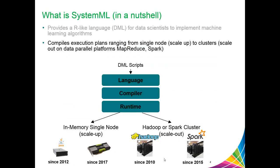SystemML has a cost-based compiler that automatically generates hybrid runtime execution plans composed of single node and distributed operations. These plans are generated depending on data and cluster characteristics such as data size, data sparsity, cluster size, and memory configurations. In our previous example, if the user specifies a small nr, then SystemML might compile a single node plan. On the other hand, if nr is large, then SystemML might compile a Hadoop or Spark plan.